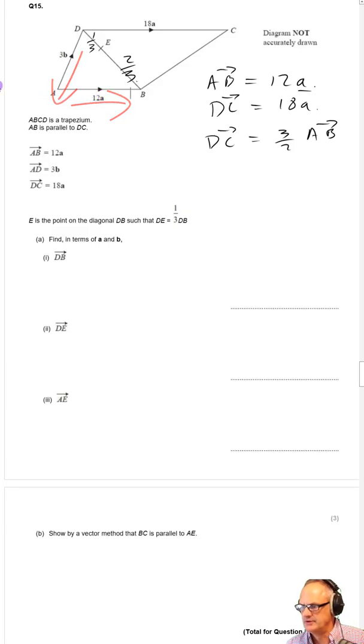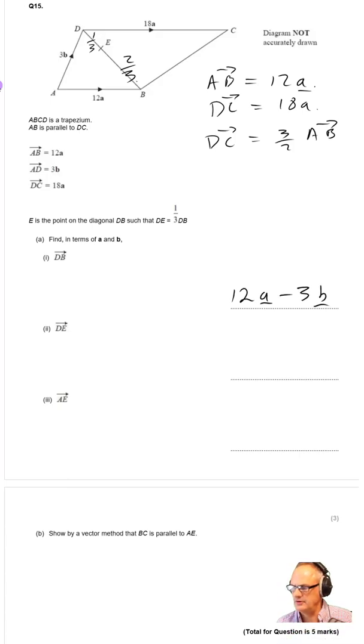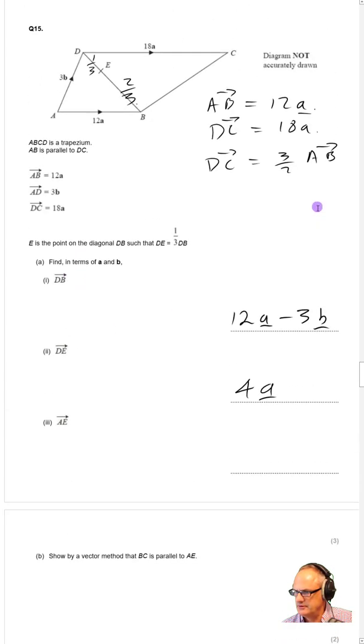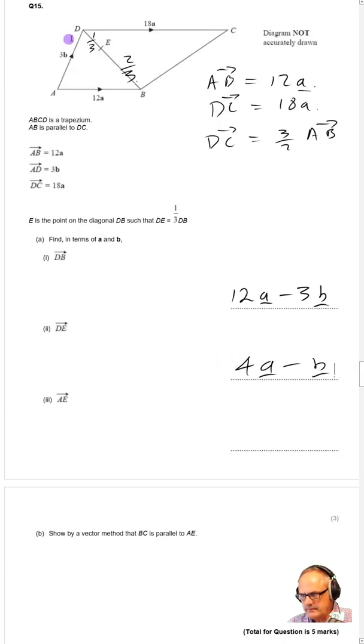Now DE is equal to one-third of that, so one-third of 12a is just 4a, one-third of minus 3b is minus b. And we want to find AE, so AE is going to be 3b plus DE.